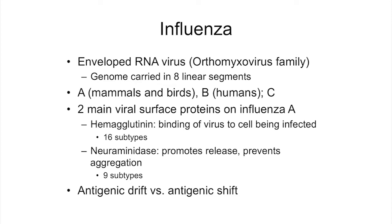Influenza A has two main viral surface proteins important in its pathogenesis. Hemagglutinin causes the binding of the flu virus to the cell being infected. Neuraminidase promotes the release of new virions from an infected cell and prevents those virions from aggregating when released. There are 16 subtypes of hemagglutinin, or H, and nine subtypes of neuraminidase, or N — that's how we get designations like H1N1.